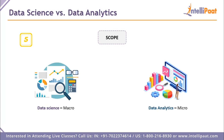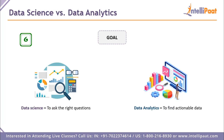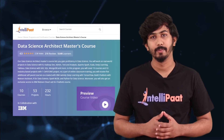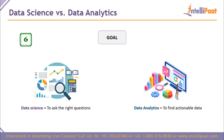Data science is a more vast field, and data analytics comes under it. Data analytics is used to do a certain set of tasks really well, and a data scientist can also perform all of those tasks. However, there are many other tasks for data scientists that a data analyst cannot do. The goal of the data science field is to ask the right questions and get the right answers from the data, while the goal of data analytics is to find actionable data that can drive business decisions.